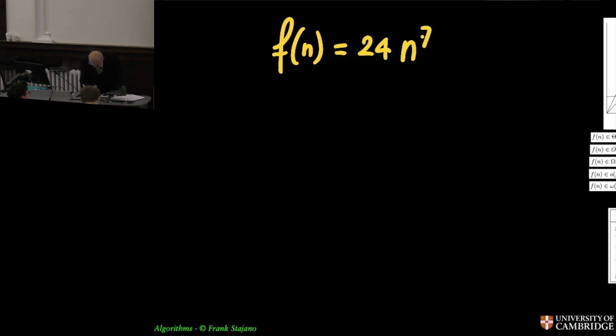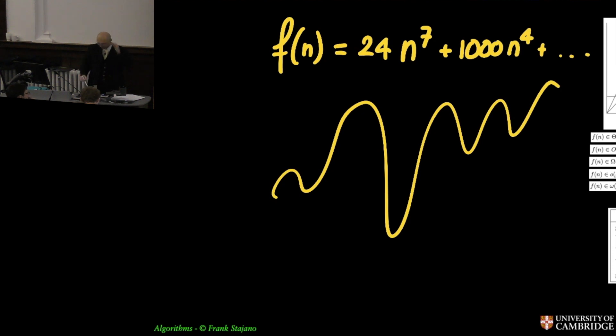Growth in the sense that if I have a function of n that tells me the cost, the time cost of running my algorithm, is 24 n to the seventh plus 1000 n to the fourth plus other things like that, then I may have a function that does plenty of squiggly things. The higher the degree the more it can be squiggly and it doesn't even have to be a polynomial but it's a function that grows with time.